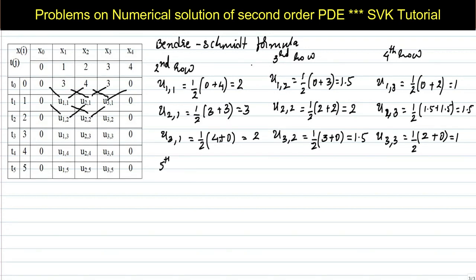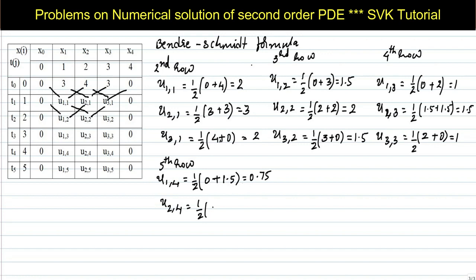For the fifth row: u(1,4) = (1/2)(0 + u(2,3)) = (1/2)(0 + 1.5) = 0.75. u(2,4) = (1/2)(u(1,3) + u(3,3)) = (1/2)(1 + 1) = 1. u(3,4) = (1/2)(u(2,3) + 0) = (1/2)(1.5 + 0) = 0.75.